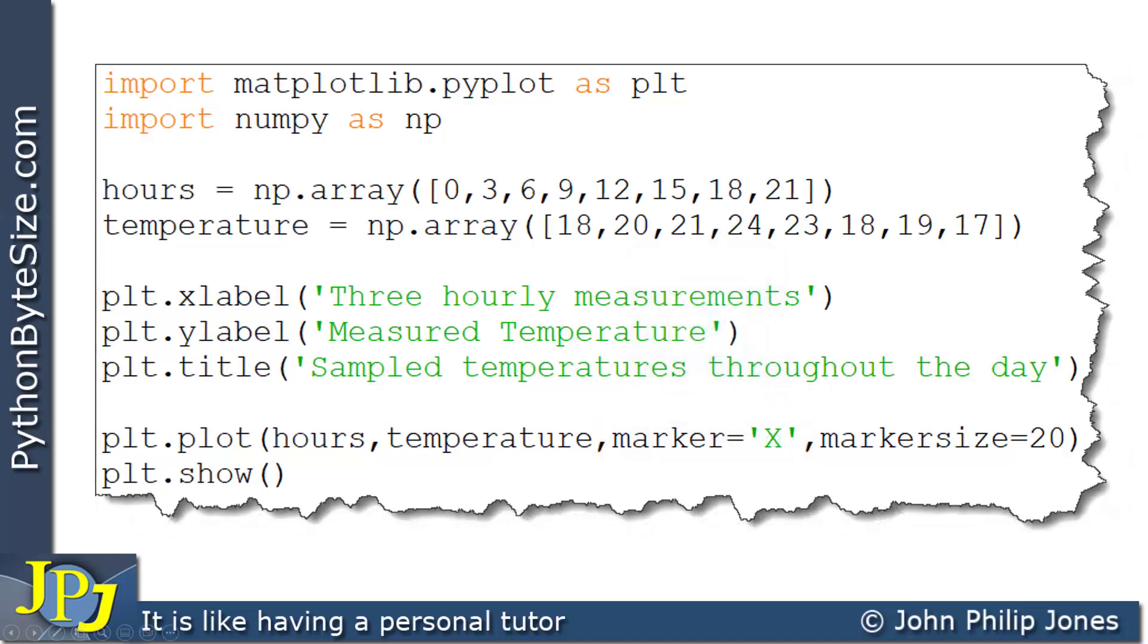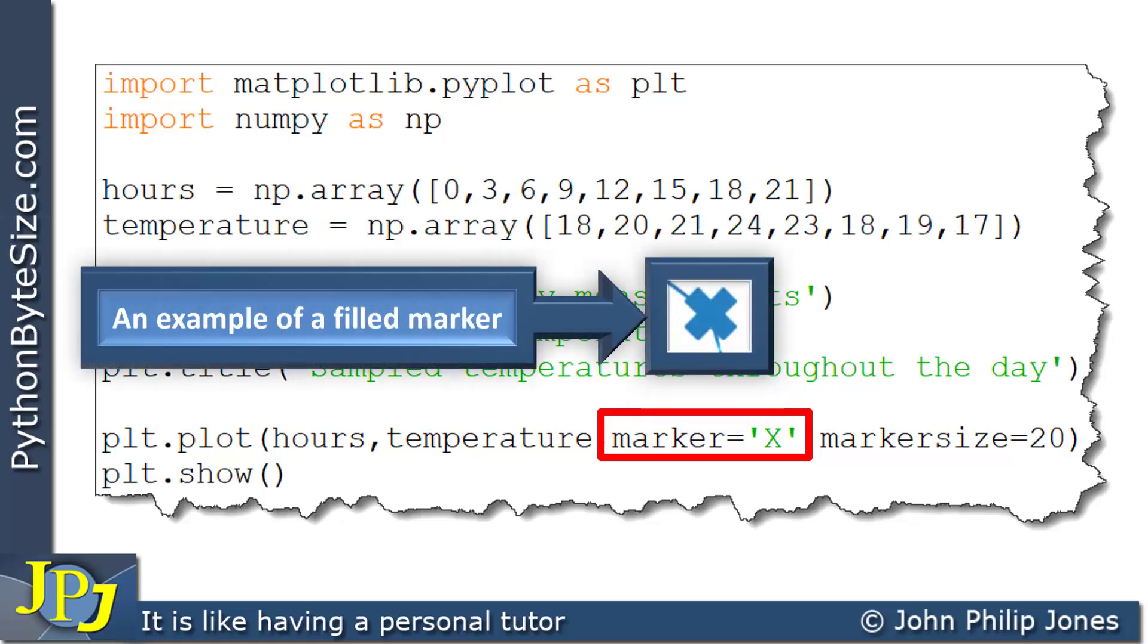Moving on, I'm now going to look what happens when we alter the code by making the marker assigned uppercase X in quotes. And what we will see is this shape appearing. Now this shape is an example of a filled marker. And I'll come back to what that means a little bit later in the video. But we can see when we make marker equal, in quotes, uppercase X, you can see the shape we get.